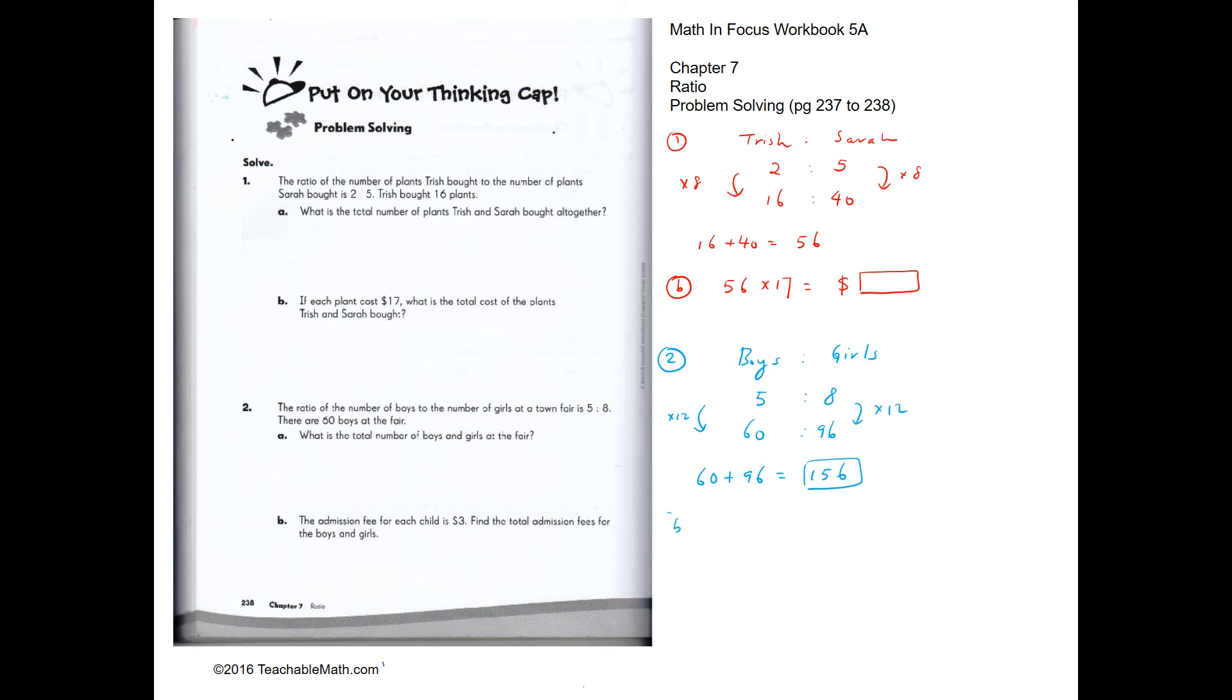And for part B, the admission fee for each child is $3. So the answer would be 156 times 3.